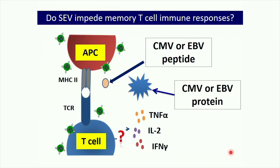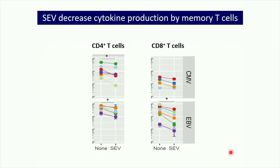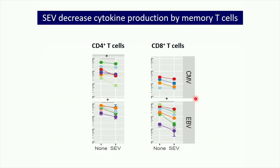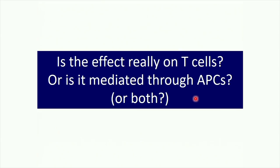SEV significantly decreased cytokine production by both CD4 and CD8 memory T cells. Plotting percent of cells responding to CMV or EBV antigen, in every case the presence of SEV inhibited cytokine production compared to antigen alone. SEV do impair memory T cell immune responses.